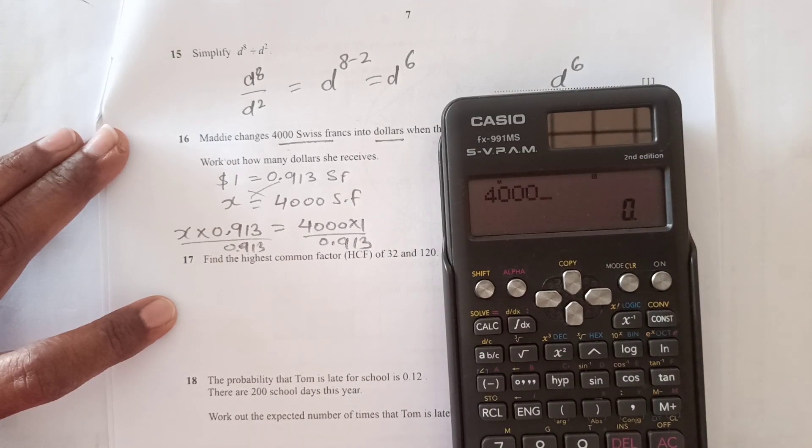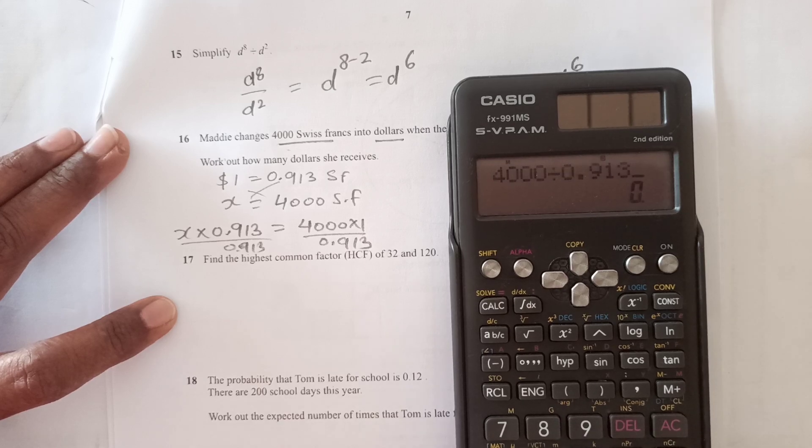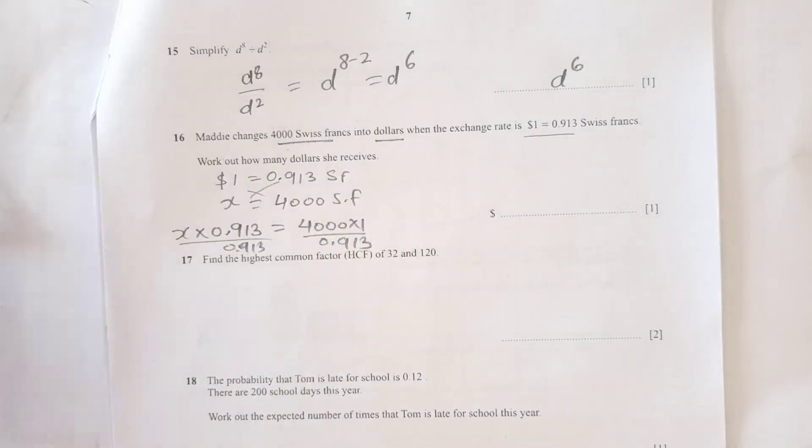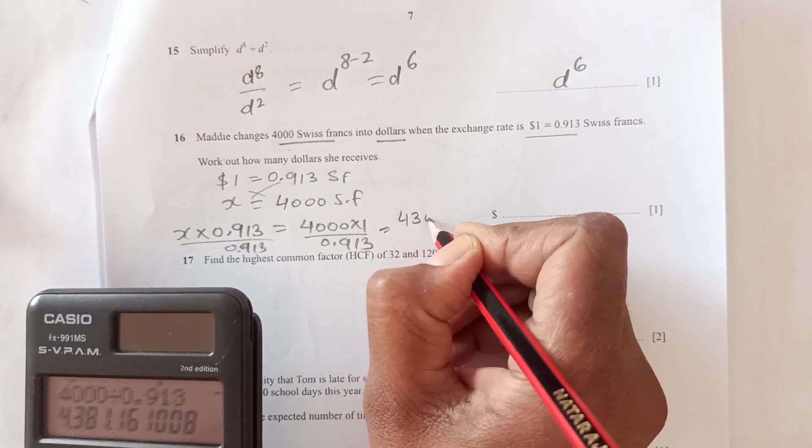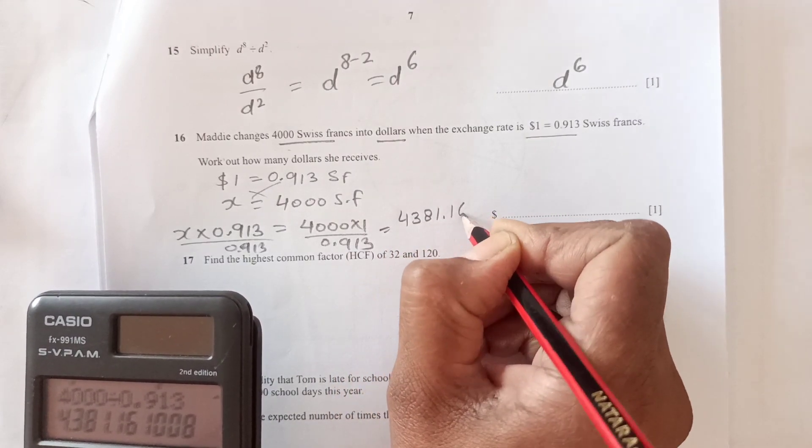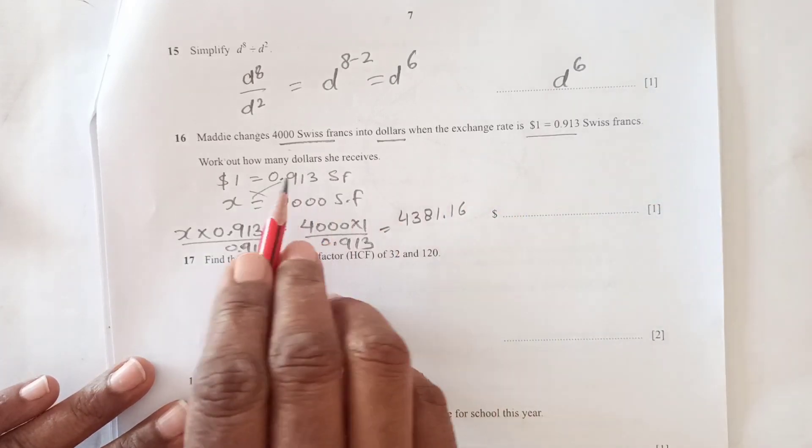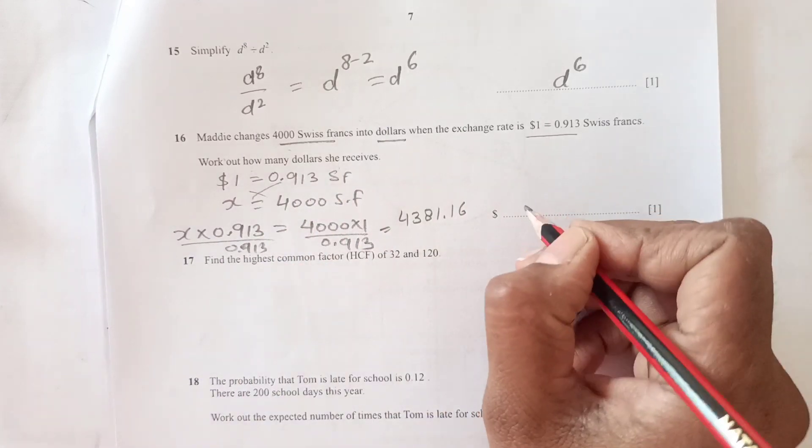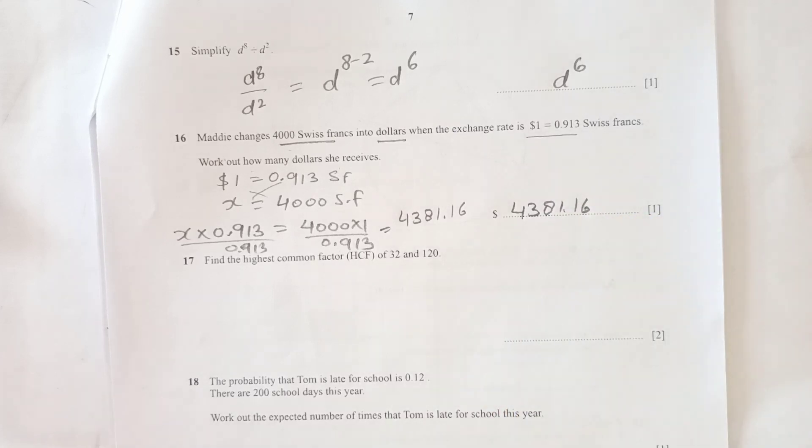Then we're just going to divide by 0.913. So 4000 divided by 0.913 equals 4381.16. That's how many dollars she receives.